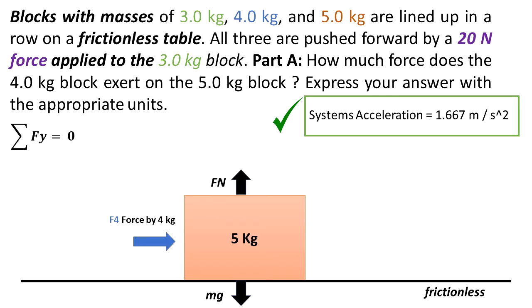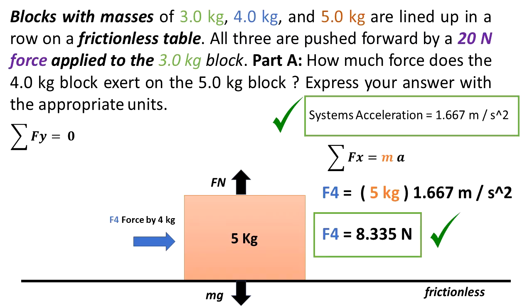We know the acceleration of the block because we found out the system's acceleration. The three blocks have the same acceleration because they are part of the same system. From this information, thinking about this block specifically, the summation of the forces in the x-direction equals the mass of this block times the system's acceleration. So F4, the force applied by the 4kg to the 5kg, is equal to 8.335 N.